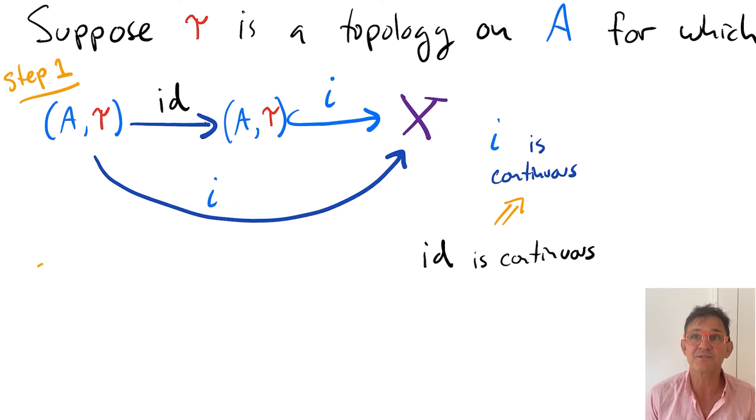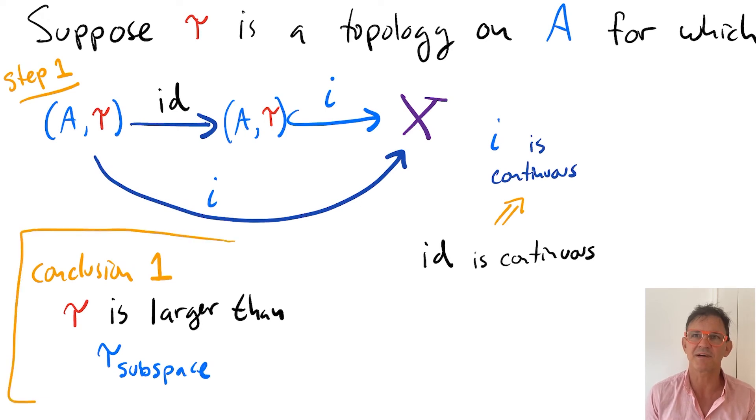Now, since the subspace topology is the smallest topology for which the inclusion is continuous, we can conclude that the topology tau has to be larger than the subspace topology.